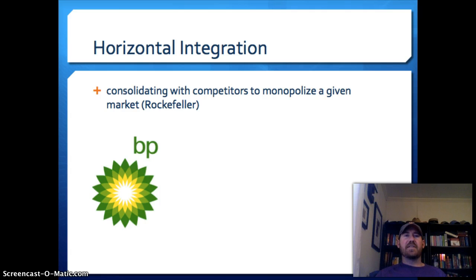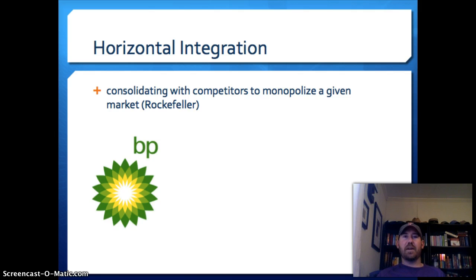Next is horizontal integration, which is different — instead of owning every step of production, you own the entire span of one step of the production process. Rockefeller is the best example: he essentially owned every refinery in his area, so there was no competition. The bottom line on both forms of integration is that you're eliminating competition and middle men, and trying to do things as cheaply as possible to maximize profit.